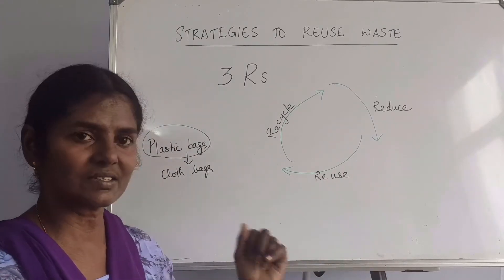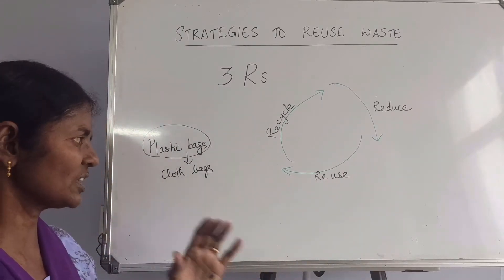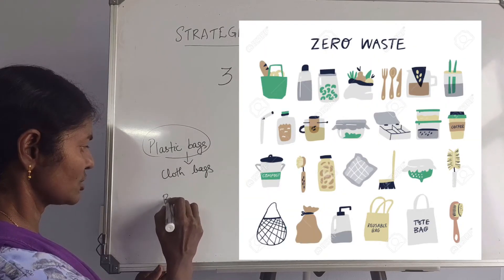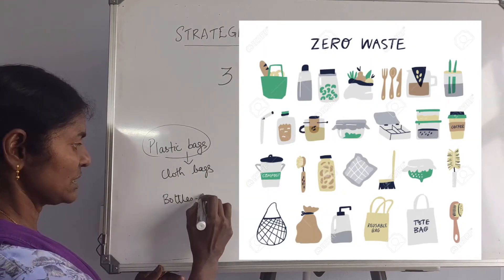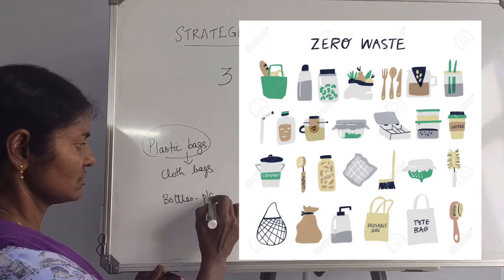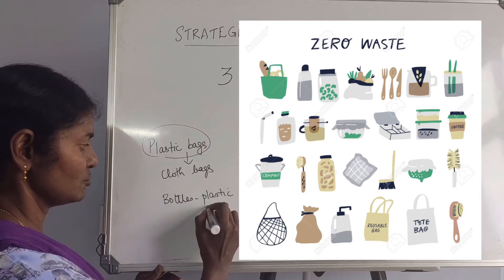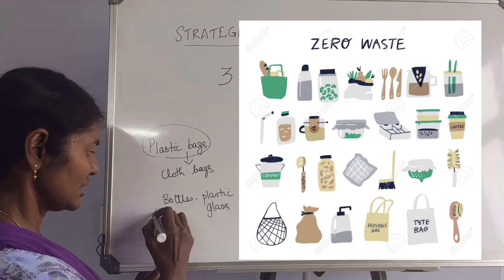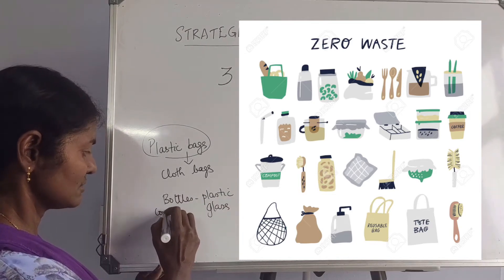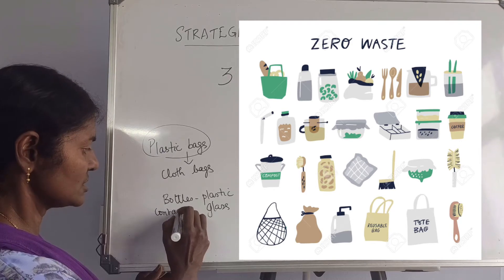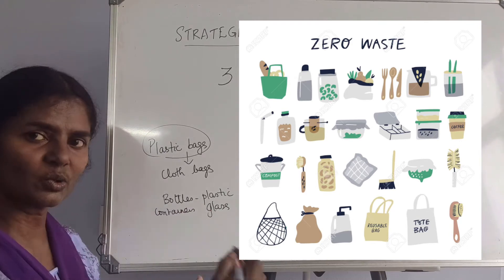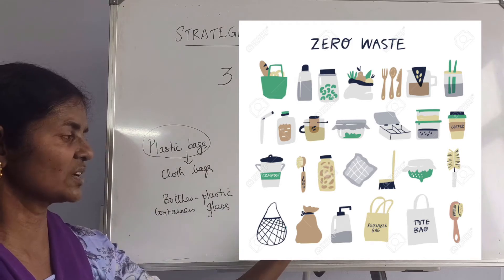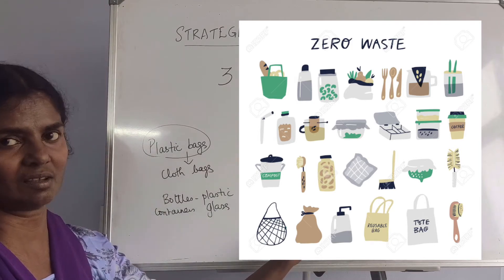The next is reuse. There are so many things like bottles — maybe plastic — then we have glass bottles, containers. All these need not be thrown away, but we can make use of them. That is, we are reusing them.